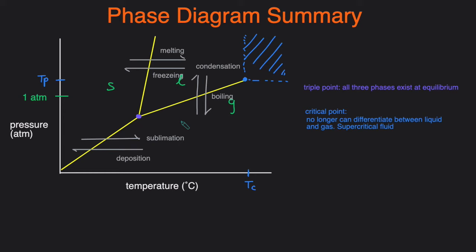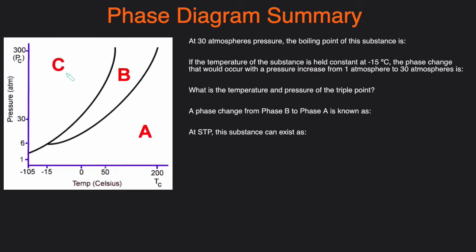Now let's look at some practice prompts. Here we have a phase diagram with regions A, B, and C. The states aren't labeled, so let's label them first. Going left to right: solid, liquid, gas — so C is a solid, B is a liquid, and A is a gas.